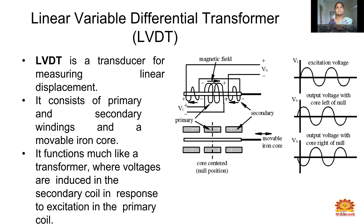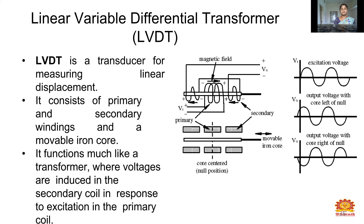Next we discuss the Linear Variable Differential Transformer (LVDT). The LVDT is a transducer for measuring linear displacement. It consists of a primary winding, secondary winding, and a movable iron core. It functions much like a transformer — a transformer has a primary and secondary winding; when we apply voltage to the primary, it produces a magnetic field, and voltages are induced in the secondary coil by excitation in the primary coil.